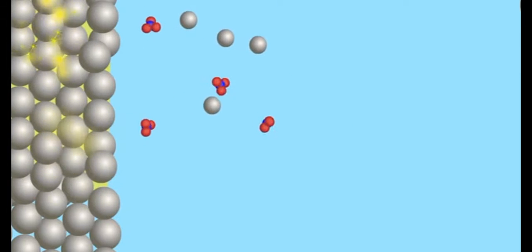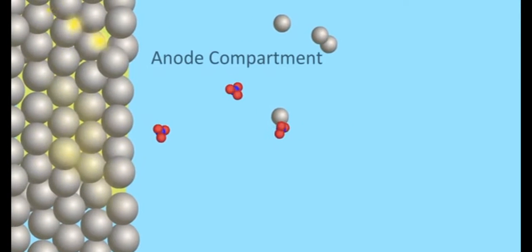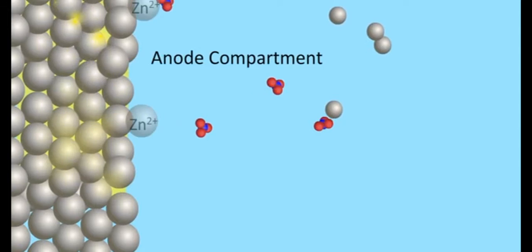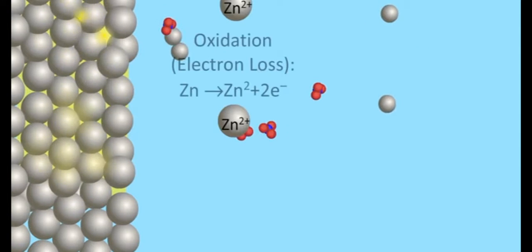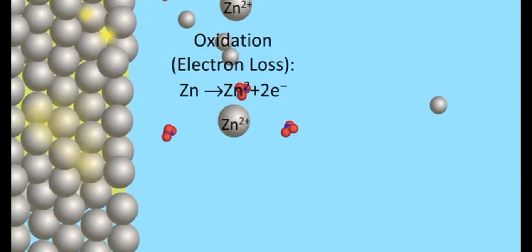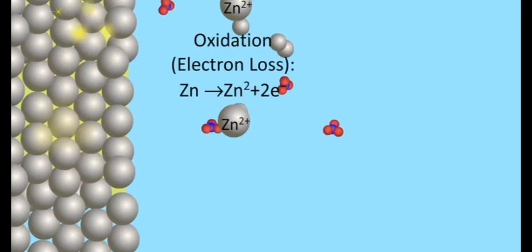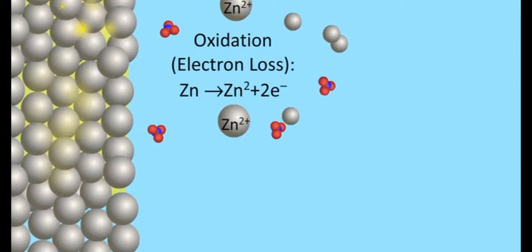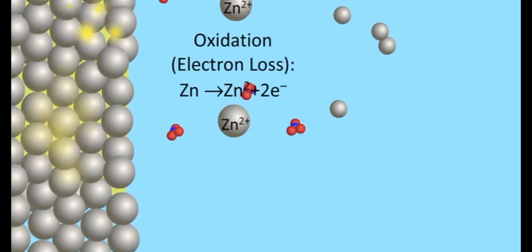In the anode compartment, it can be seen that zinc electrode gets oxidized and loses electrons to form Zn2+ ions, and thus zinc rod gradually loses its weight.